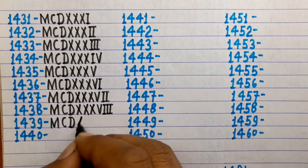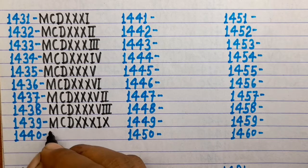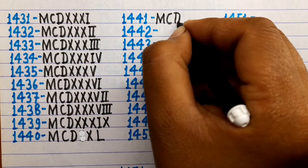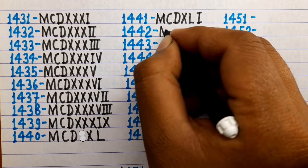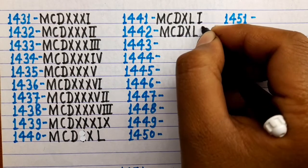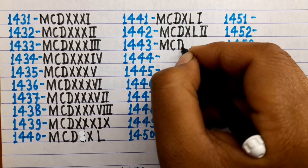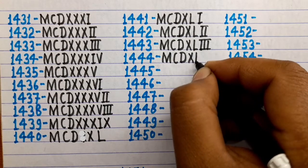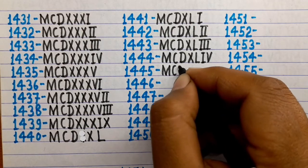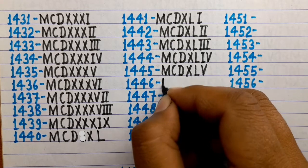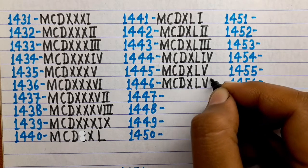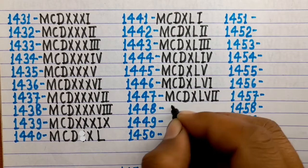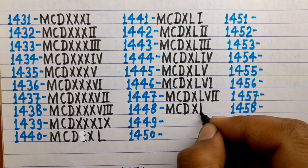1439 is MCDXXXIX. 1440 is MCDXL. 1441 is MCDXLI. 1442 is MCDXLII. 1443 is MCDXLIII. 1444 is MCDXLIV. 1445 is MCDXLV. 1446 is MCDXLVI. 1447 is MCDXLVII. 1448 is MCDXLVIII.